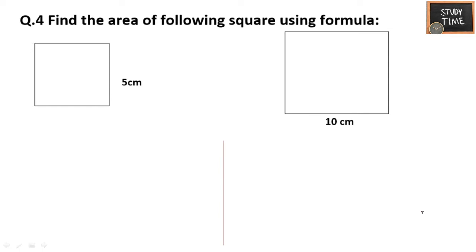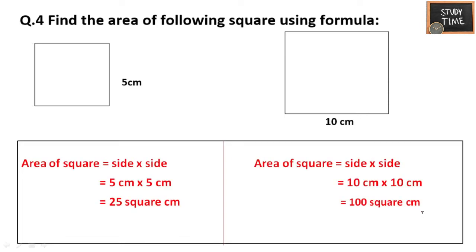Find the area of the following squares using the formula. Area of a square is side into side. 5 cm into 5 cm is 25 square centimeters. For the next one, 10 into 10 is 100 square meters.